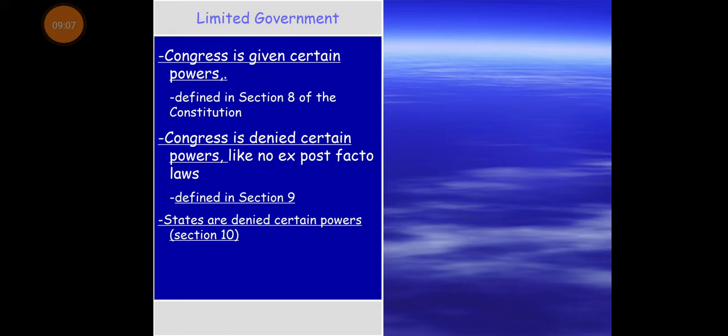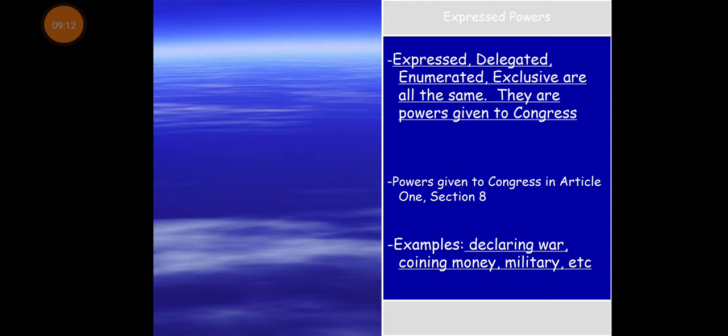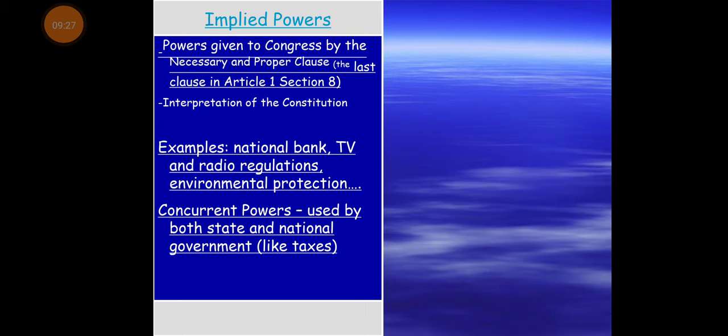Powers of Congress: remember Congress can do certain things and is denied certain powers. There are expressed powers — Article 1, Section 8 lists them off — with some easy examples. They can go by any of those terms. Implied powers, which we've also talked about before — healthcare could be an example as well.